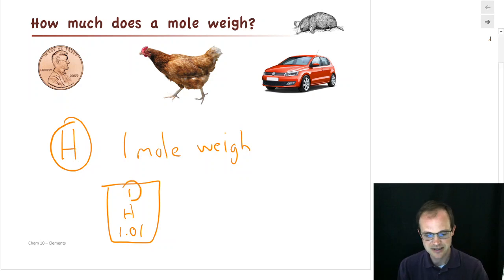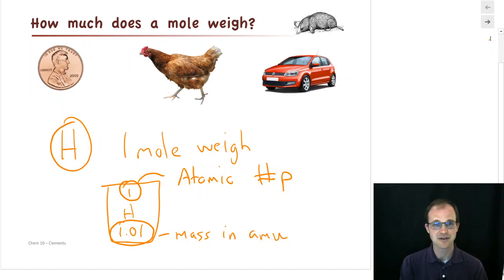And what is it? We learned this top number was what we call the atomic number. It was literally counting the number of protons. There's one proton in hydrogen. This bottom number, what did we learn about it? We said this was its mass in AMU. The mass of hydrogen was 1.01 AMU, and that's for one hydrogen atom.